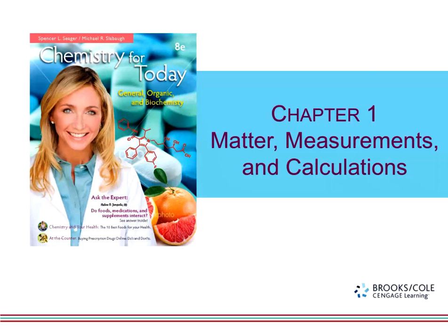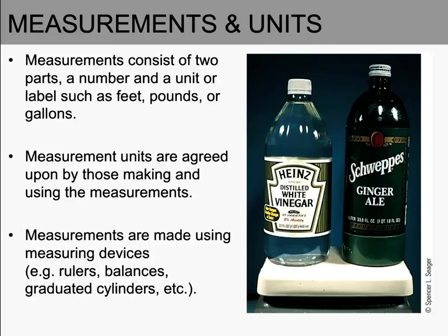Today we're going to continue our discussion on chapter 1 and dive into measurements and calculations. Measurements consist of two parts: a number and a unit or label, such as feet, pounds, or gallons. Measurement units are agreed upon by those making and using them. In the US we use units like feet, pounds, and ounces, while most of the rest of the world uses the metric system.